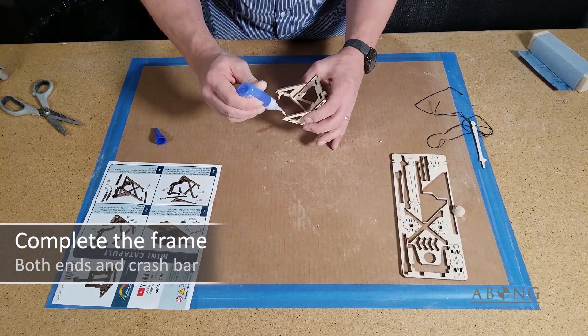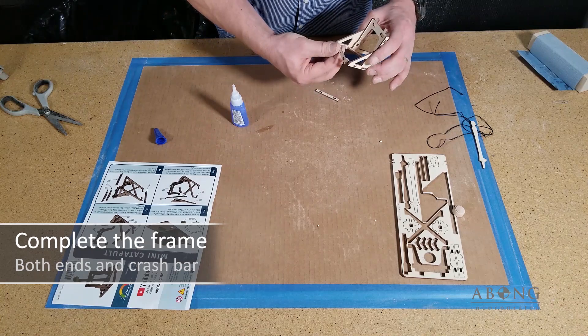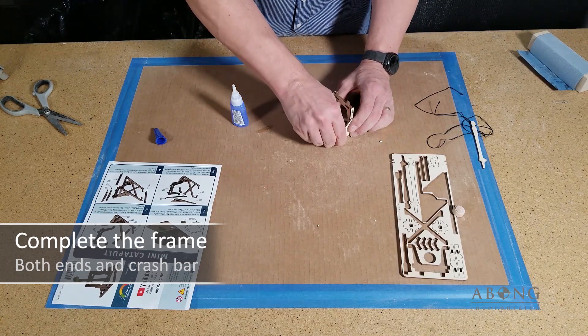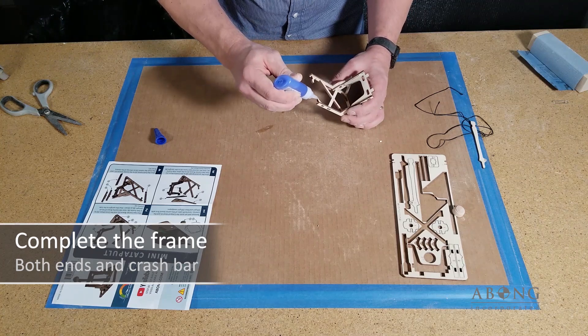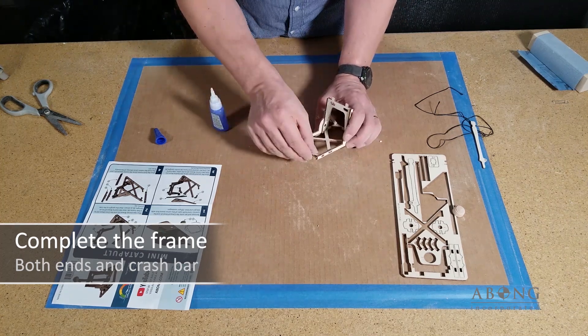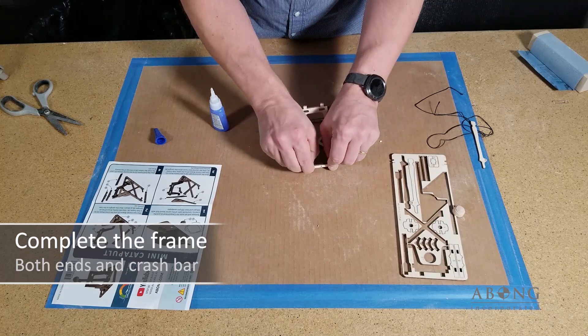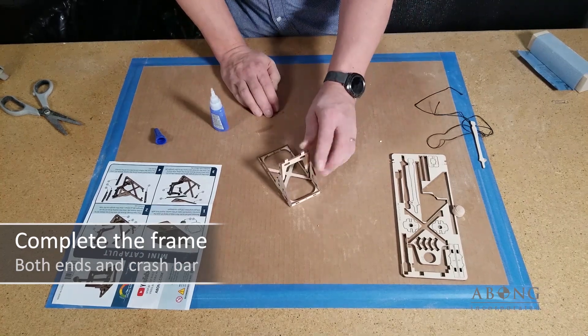And now we can go ahead and put in the two cross braces. So there's a cross brace at the front and at the back, the same piece. So it doesn't matter which one you put where. Again, you probably want to put the marked side facing inward so that you can't see it from the outside of the kit.